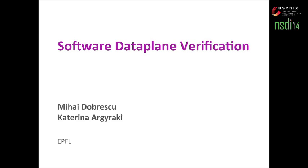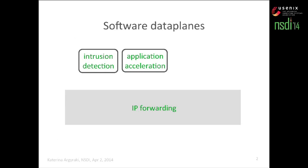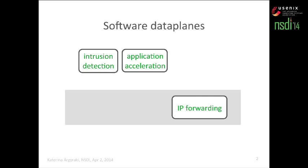The primary author of this work is my student Mihai Dobrescu, who would be normally giving the talk, but unfortunately he couldn't make it at the last minute, so I will do my best to replace him. This talk is about software data planes — network devices that perform their line rate packet processing functionality, for instance IP forwarding, in software running on general purpose CPUs.